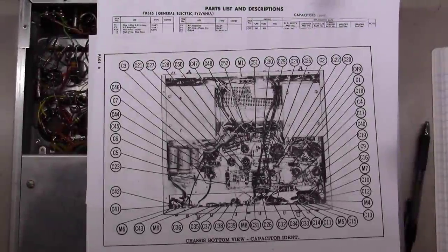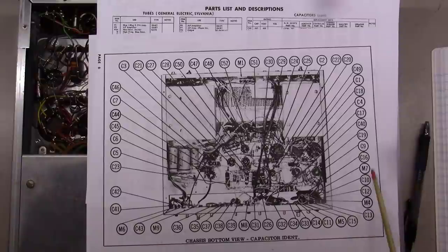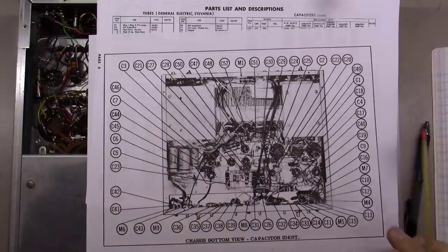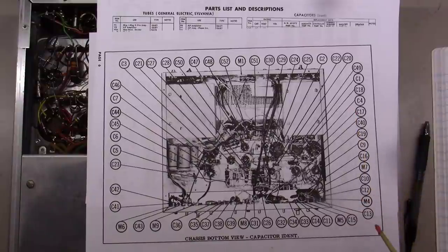Here's the beauty of having a Sam's Photo Fact folder if you can find one. One, it points you and it already labels and numbers all your capacitors for you. So, when you're building your parts list or BOM, you can easily label them this way, okay? Number two, it gives you a nice little laid out.